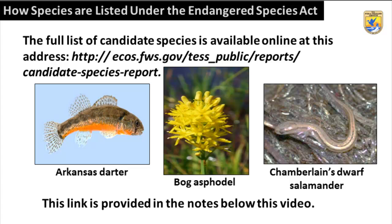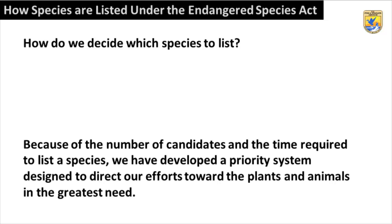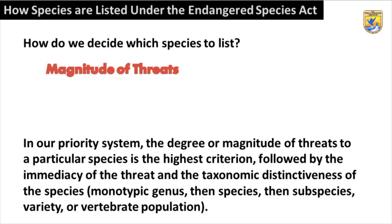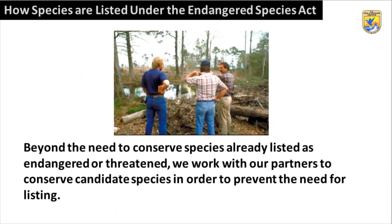How do we decide which species to list? Because of the number of candidates and the time required to list a species, we have developed a priority system designed to direct our efforts toward the plants and animals in the greatest need. In our priority system, the degree or magnitude of threat is the highest criterion, followed by the immediacy of the threat and the taxonomic distinctiveness of the species — such as a monotypic genus, then species, then subspecies, variety, or vertebrate population. Beyond the need to conserve species already listed, we work with partners to conserve candidate species in order to prevent the need for listing.